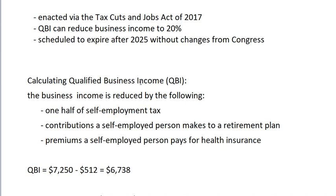To calculate the qualified business income deduction, we first need to calculate two things: the qualified business income and the ordinary taxable income. Qualified business income is the business income reduced by the following: one-half of the self-employment tax, contributions by a self-employed person to a retirement plan, and any health insurance premiums paid by the self-employed person.